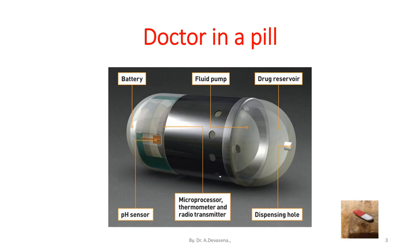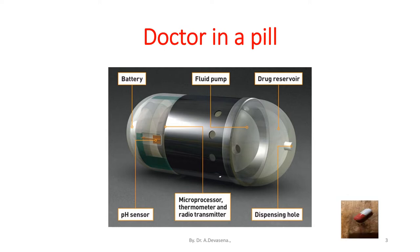This diagram represents a complete kit available inside the radio pill. A pressure sensor is kept inside the pill. For operating the radio pill, a battery is connected and the circuit setup comprises of a microprocessor, thermometer, and radio transmitter. A fluid pump and a drug reservoir are available in the radio pill.